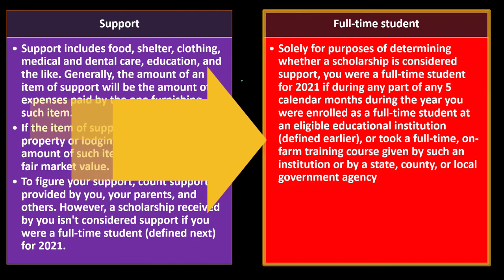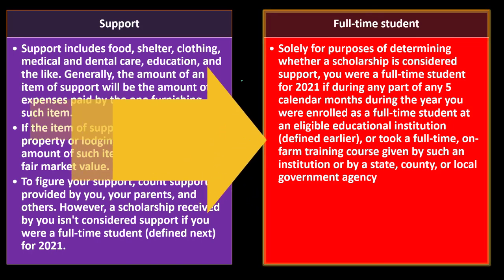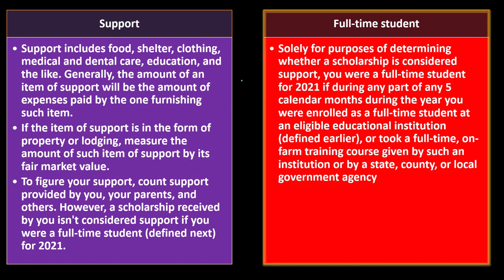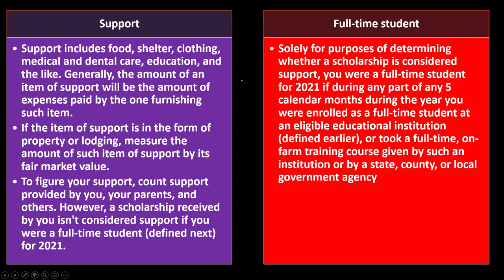For purposes of determining whether a scholarship is considered support, you were a full-time student for 2021 if during any part of any five calendar months during the year you were enrolled as a full-time student at an eligible educational institution, or took a full-time on-farm training course given by such an institution or by a state, county, or local government agency. The actual educational institution will define full-time status, which varies by institution — semesters versus quarters, for example — so check with your institution.